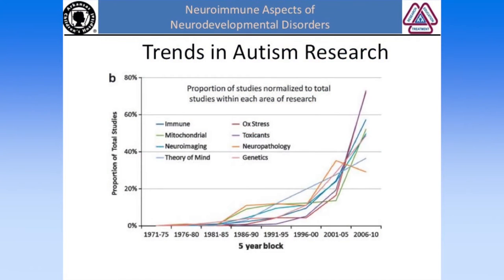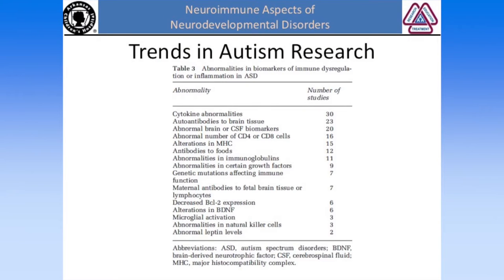Looking at the proportion of total studies published per year, the areas that have gained the most traction include immune dysregulation and investigations of toxicant exposure. In our review, we looked at the different abnormalities reported in immune dysregulation and the number of studies. Most studies with a lot of papers include cytokine abnormalities, autoantibodies to brain tissue, biomarkers in the CSF, abnormalities in CD4 and CD8 cells, major histocompatibility complexes, antibodies to foods, and abnormalities in immunoglobulins.